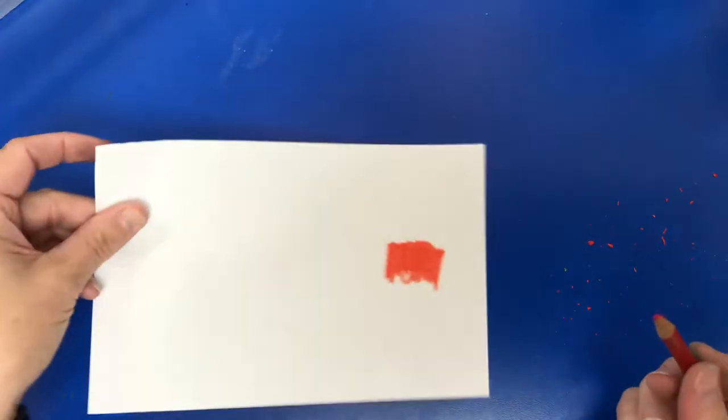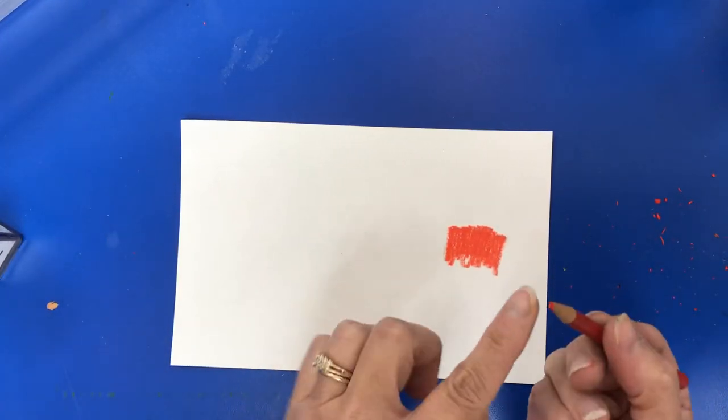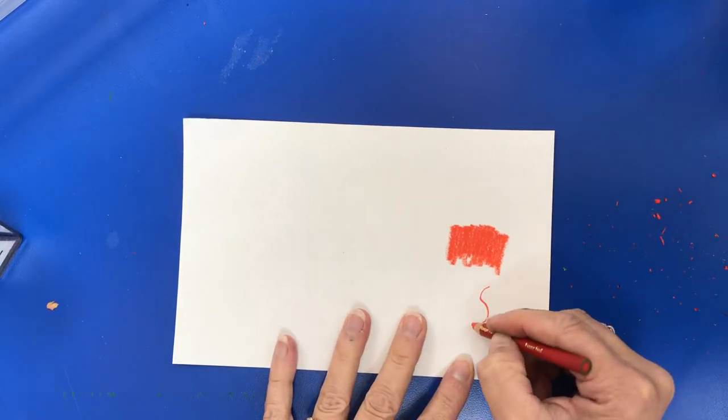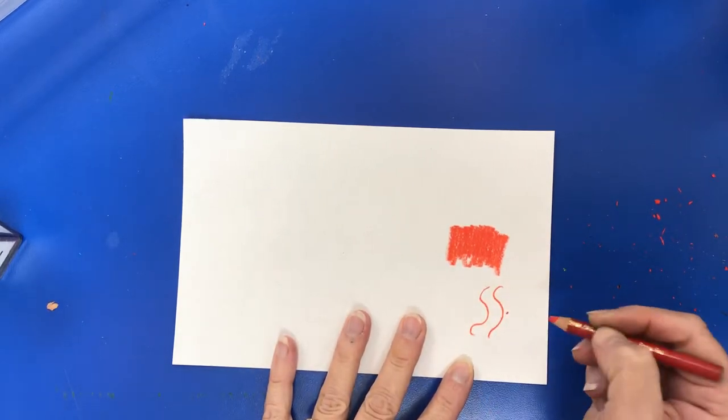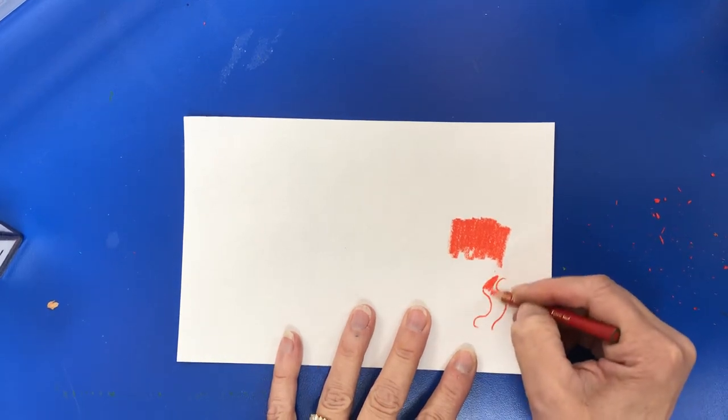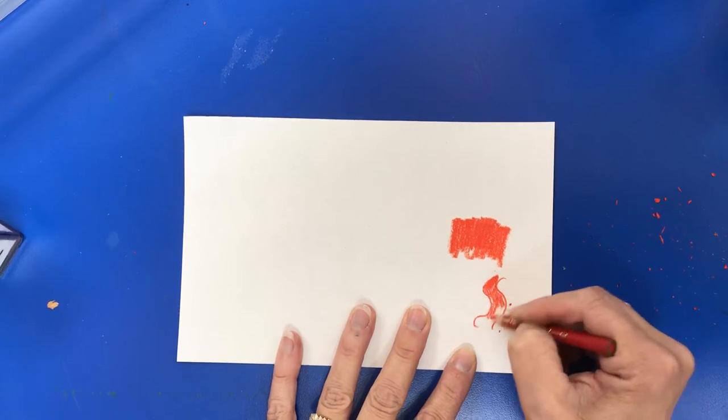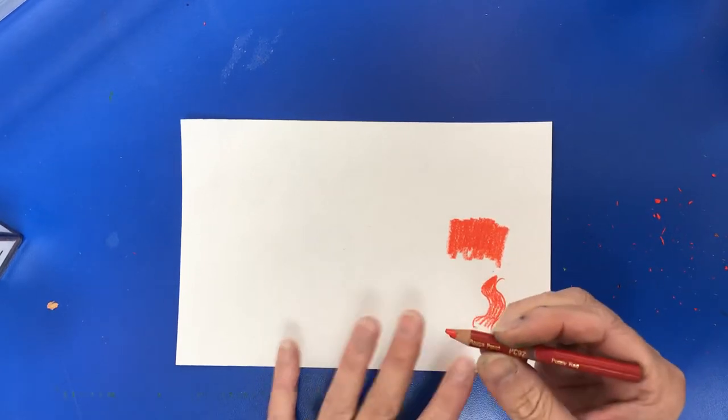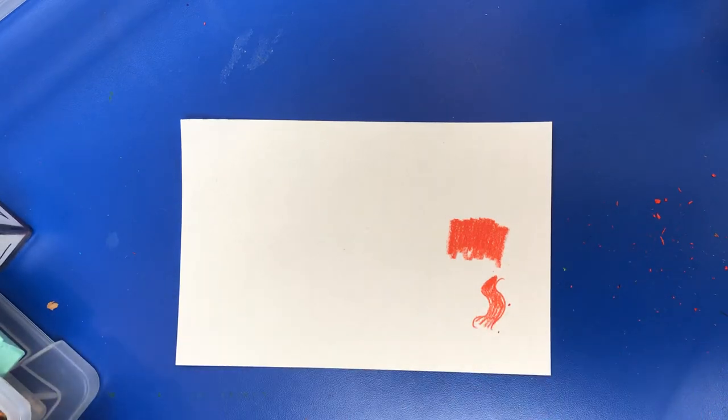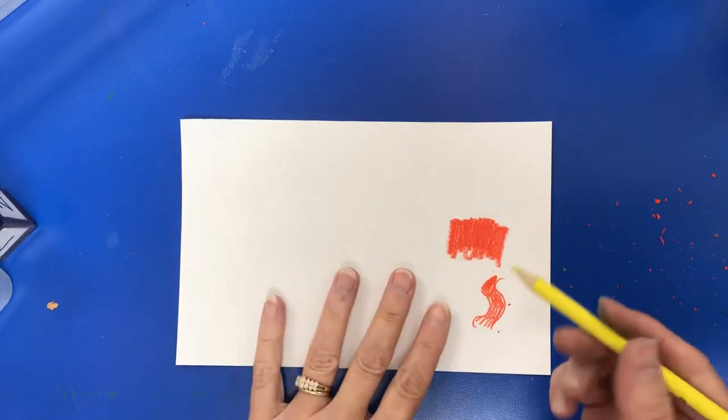One thing that's nice about colored pencils is that even if they're like this and not at a really fine point, you can get some pretty detailed work unlike crayons or oil pastels. And then you can also do a little bit of blending. Here's a red - I think this is a poppy red.